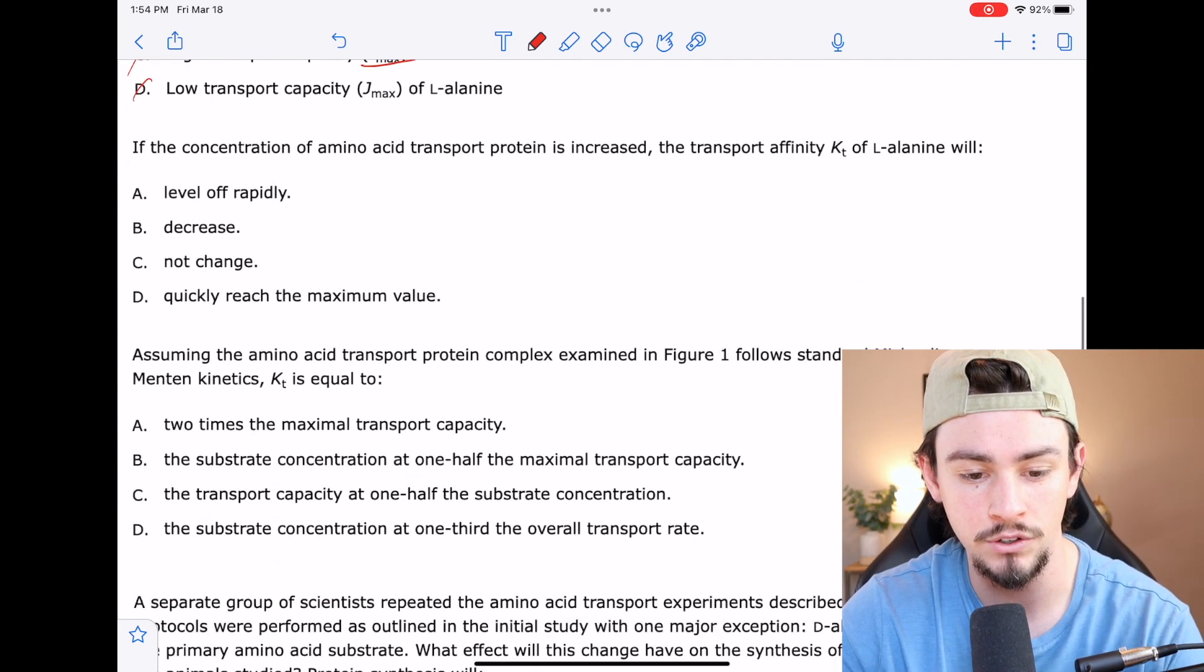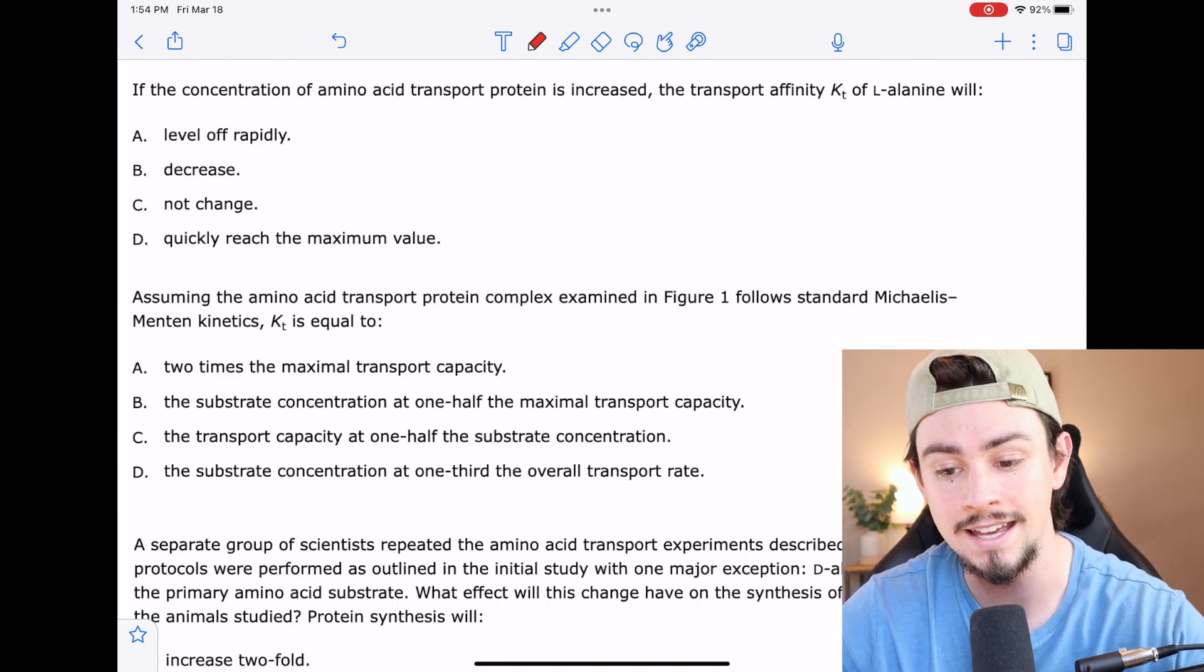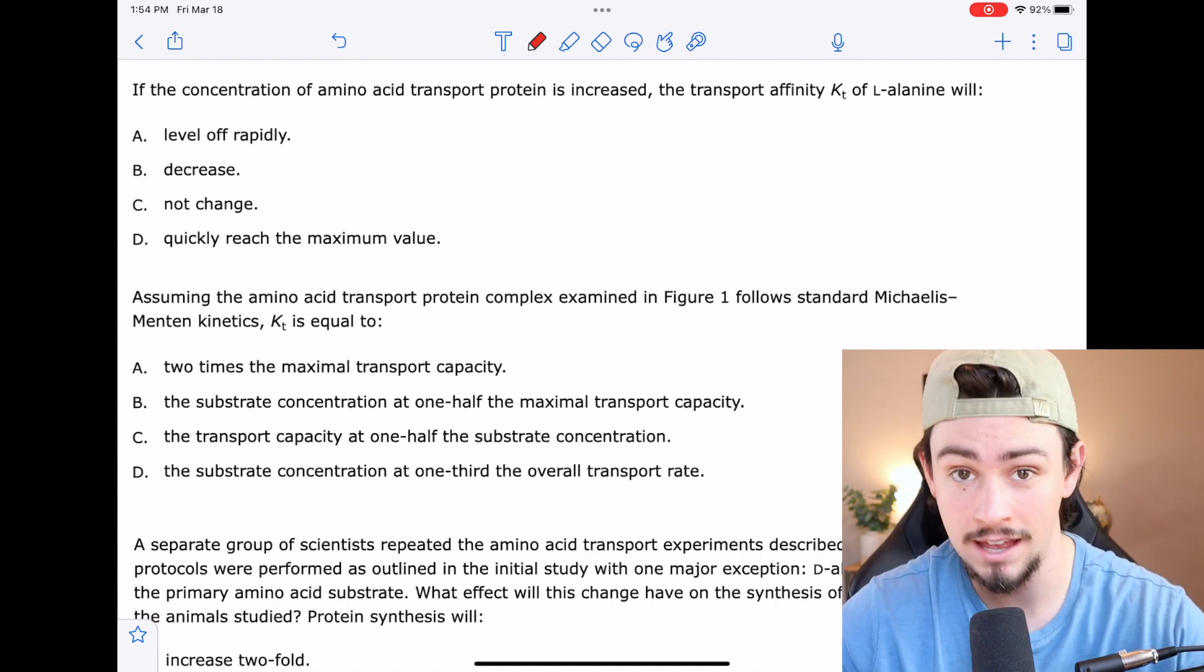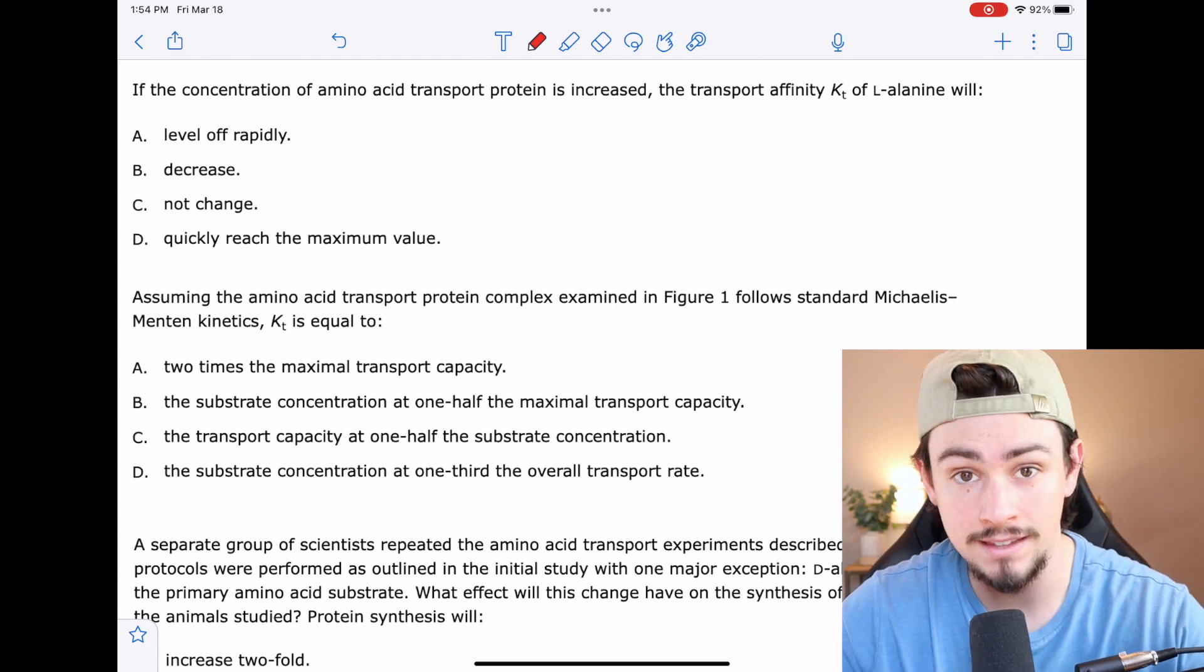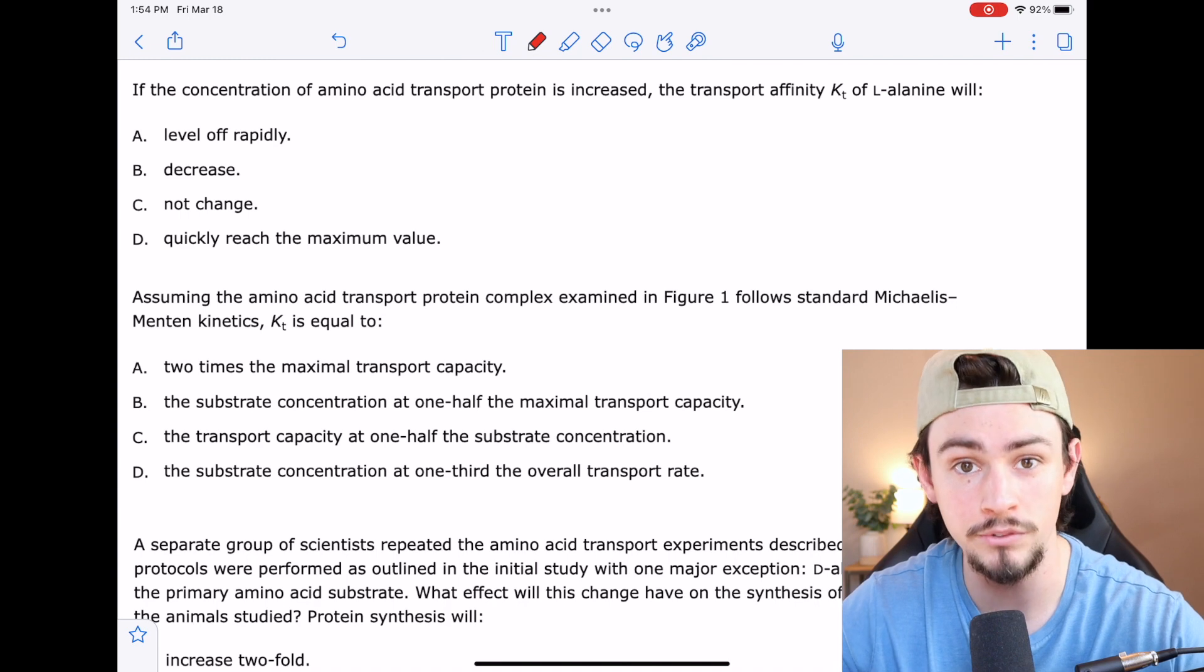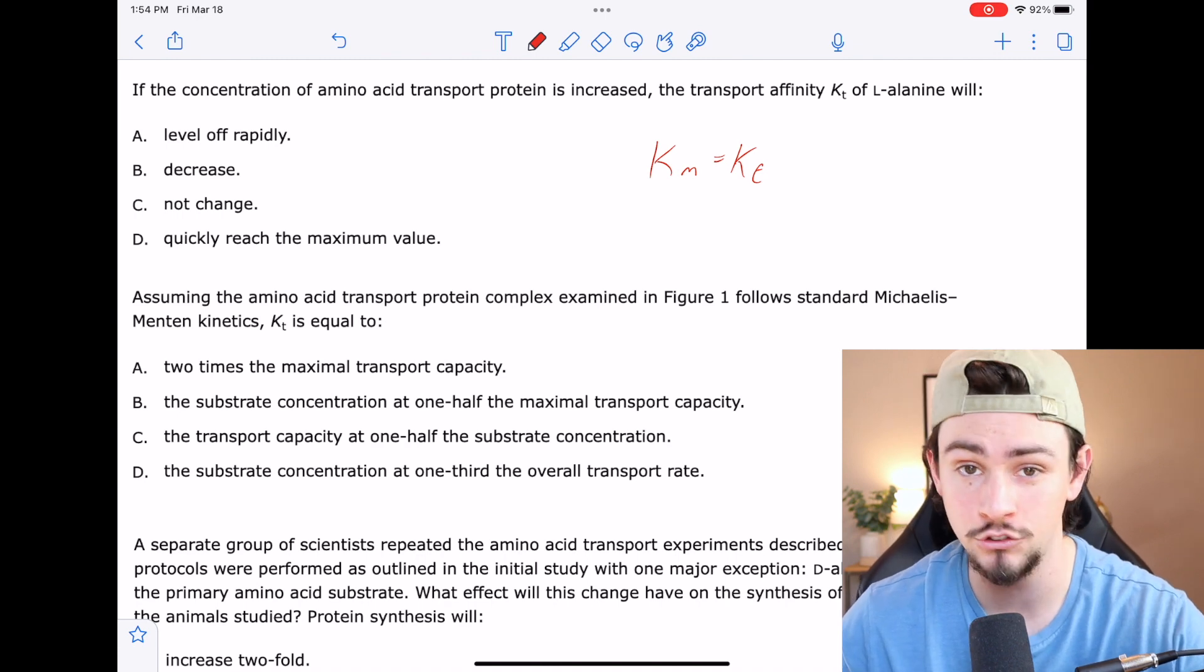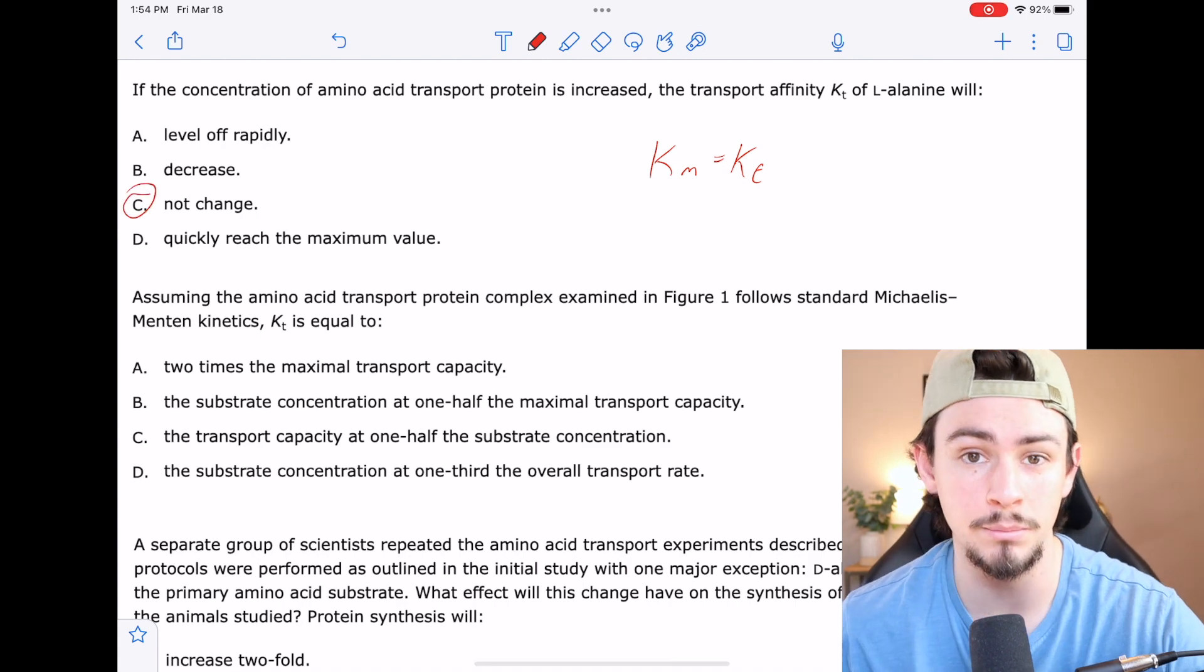24 says if the concentration of amino acid transport protein is increased, the transport affinity KT of L-alanine will what? So they're saying if we increase the amount of enzyme that we have, how does that affect our KM? And the correct answer is that KM is an intrinsic factor of the protein and KM is synonymous to KT in this situation. So that means that our KM or our KT will not change depending on the amount of enzyme that we have. So the correct answer here is going to be C.